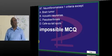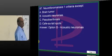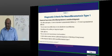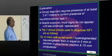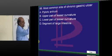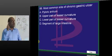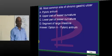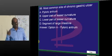Neurofibromatosis criteria — another painful and impossible question. Who will remember all the list of criteria and identify which one is not there? Very difficult. With negative marking, don't even touch those questions. Most common location for chronic gastric ulcer: pyloric antrum. If you don't answer this, you are out.